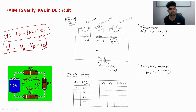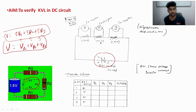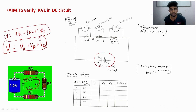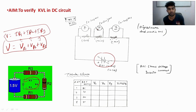Let's see the experimental diagram. There is an RPS and three rheostats connected in series: 50 ohm, 100 ohm, and 150 ohm. Three voltmeters are connected in parallel with these rheostats. You can set the rheostat to 50 ohm, 100 ohm, or 150 ohm as per your requirement.